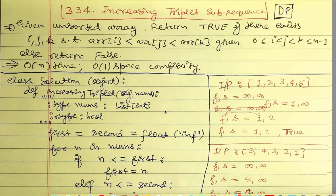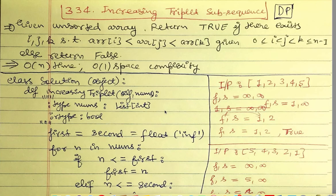Hi everyone, welcome again. In this session we will talk about a problem known as Increasing Triplet Subsequence, LeetCode 334. Given an unsorted array, we return true if there exists a triplet of indexes i, j, k which are in increasing order and the numbers at those indexes are also in increasing order.